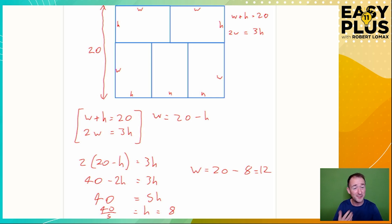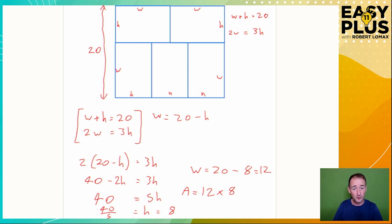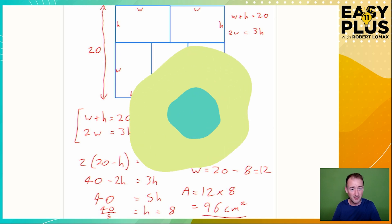How do we find the area? The area is just the width times the height: 12 times 8. So area equals 12 times 8. If you get a little stuck, remember that 2 lots of 12 is 24, so 4 lots of 12 is 48, and 8 lots of 12 will be 96. Don't forget the units. And that's our answer.